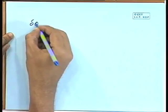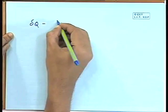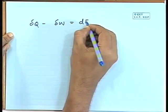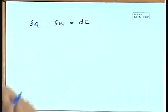Now we would like to look a little bit in detail at what this quantity dE is. Let us write down once again: dQ minus dW is equal to dE. Obviously these are differential quantities; if it is a finite process we can integrate it.